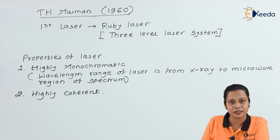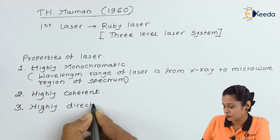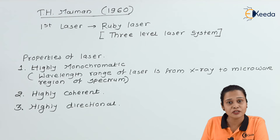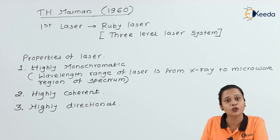The third property is that laser is highly directional — the divergence is very small, which is why it can travel a very long distance, leading to a huge number of applications. The size of a laser varies from one-tenth of the diameter of a human hair to that of a large building, so lasers are available in different sizes. These are some important properties of laser.